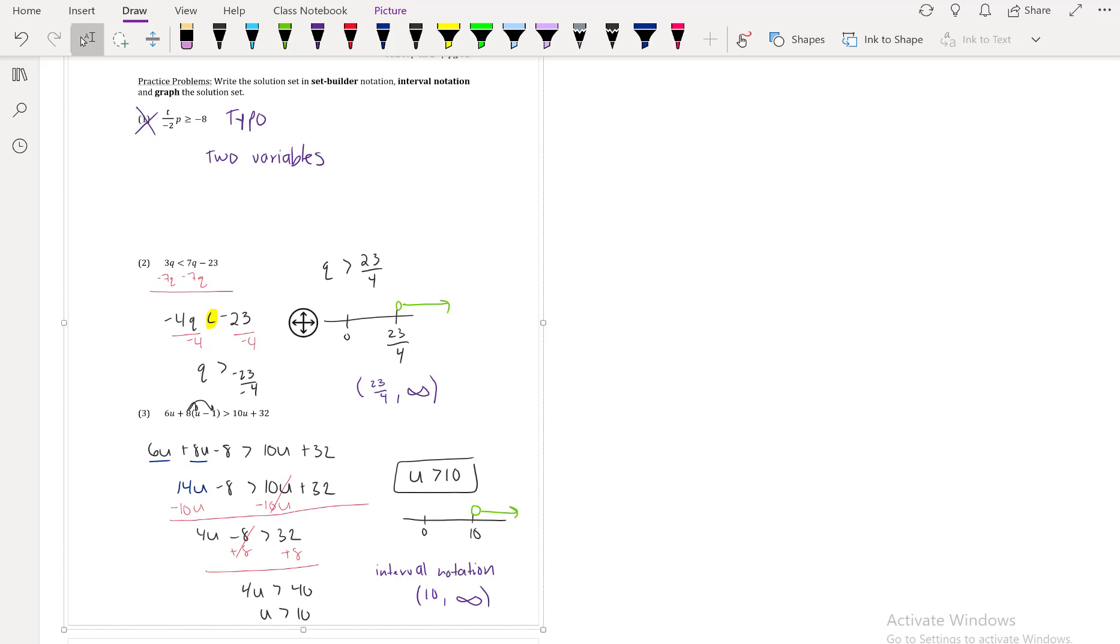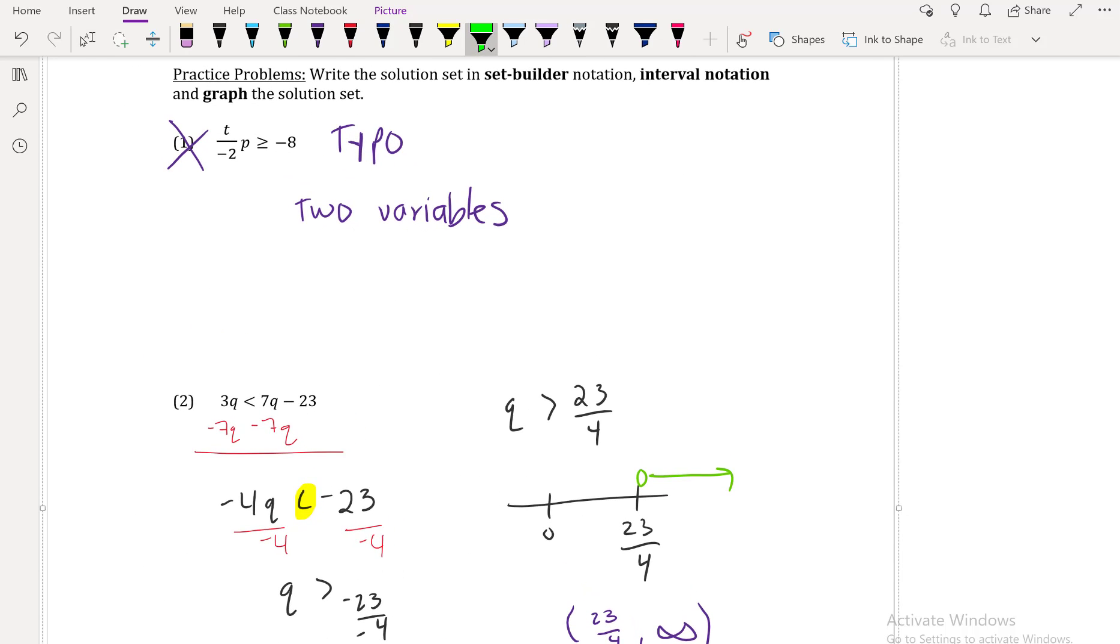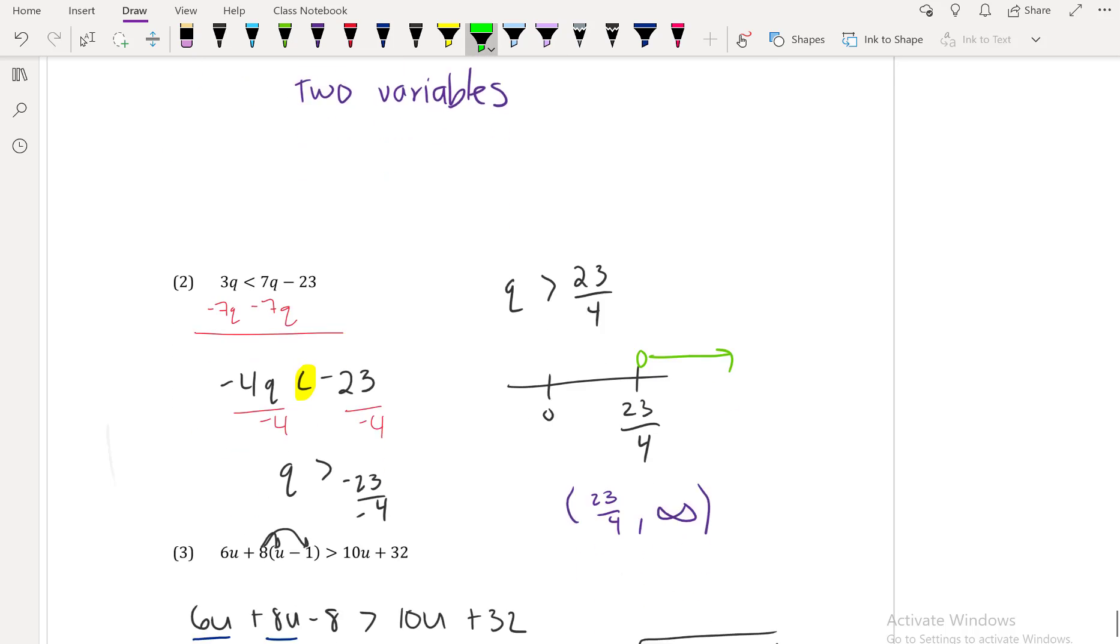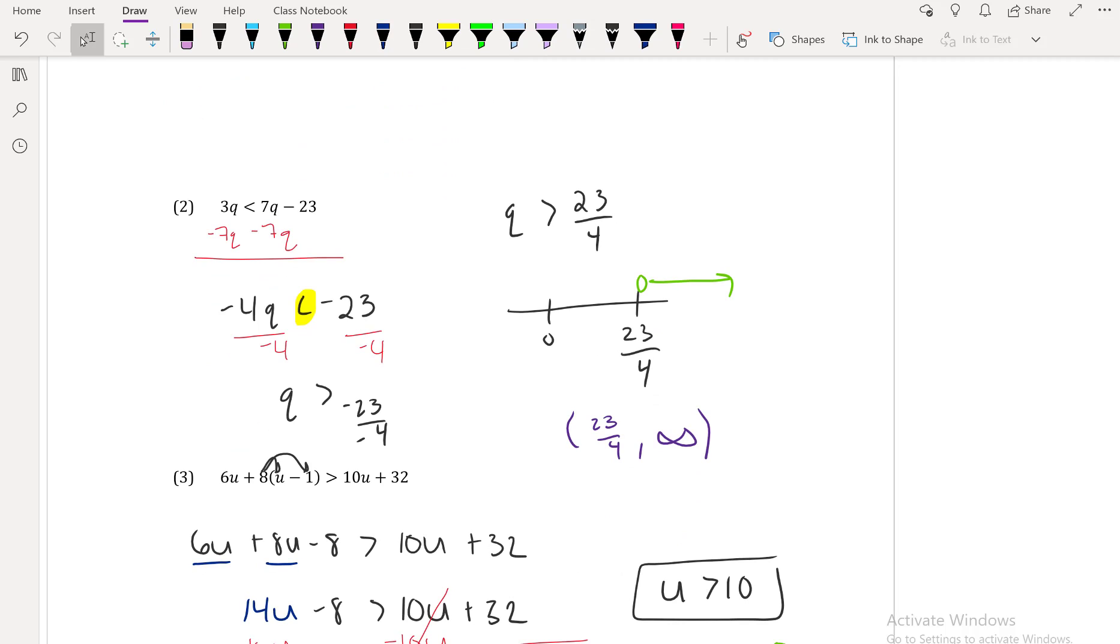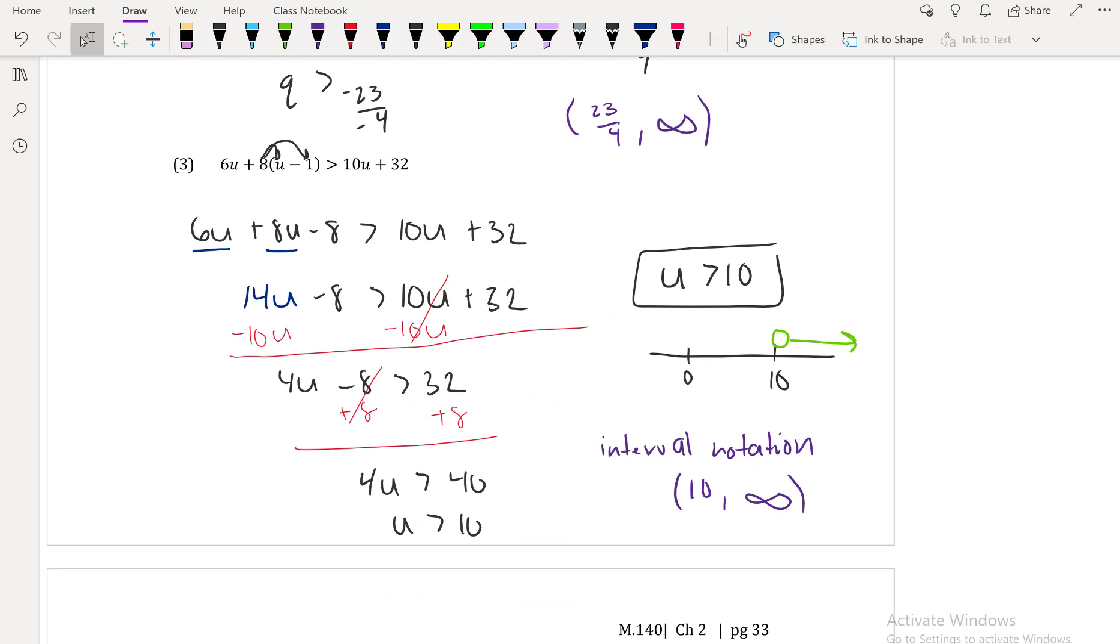Okay, so I worked out those three problems. And I do apologize. That first one, there was a typo. There was actually two variables in number one. I have a T and a P, which makes it really difficult to solve those problems. So typo, sorry about that. For number two, I got the Q isolated, and I got it so that Q is greater than 23 over 4. So when you graph it, it's an open circle. And I have my interval notation. For number three, I had to distribute the eight into the parentheses, combine my terms, get the U isolated. And I get that U is greater than 10. So I graphed it with an open circle. And I have my interval notation.